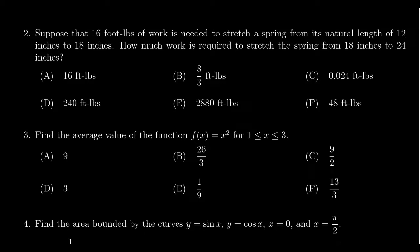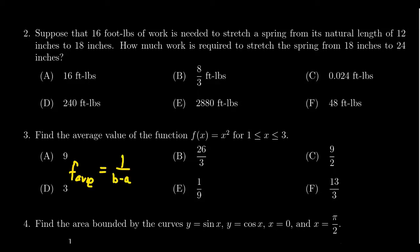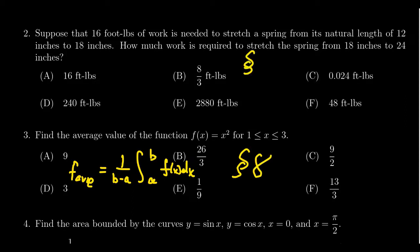Question number three is going to ask you to compute the average value of a function. You're given a function — in this case F(x) = x² — and an interval. The thing to remember about average value is that the average value of a function equals one over (b minus a) times the integral from a to b of F(x) dx. We learned how to do that in lecture eight — the second half of lecture eight was about average value. If you want more practice, look at lecture eight.